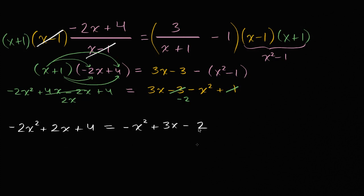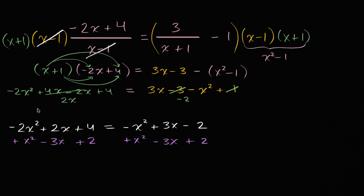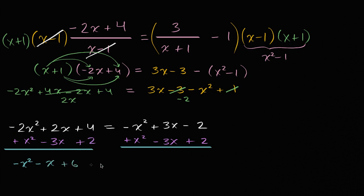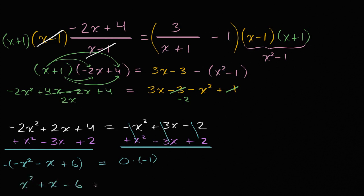Now let's get everything onto one side. We add x squared to both sides, subtract three x from both sides, and add two to both sides. That gives us negative two x squared plus x squared equals negative x squared; two x minus three x equals negative x; and four plus two equals six on the left, while the right side equals zero. So we have negative x squared minus x plus six equals zero. Multiplying both sides by negative one gives us positive x squared plus x minus six equals zero.